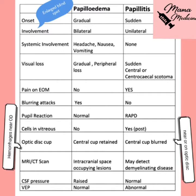Moving on to clinical investigations: in papilledema you are most likely to find an intracranial space-occupying lesion, whereas in papillitis you may detect a demyelinating disease like multiple sclerosis. CSF pressure is raised in papilledema due to impaired cerebrospinal fluid circulation, but is usually normal in papillitis. Visual evoked potentials are mostly normal in papilledema but abnormal in papillitis.